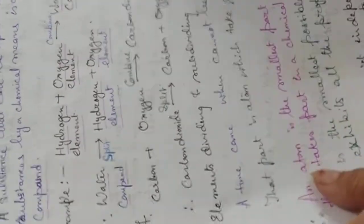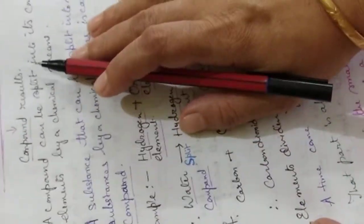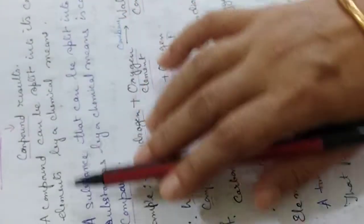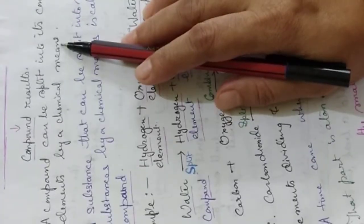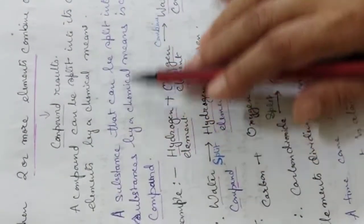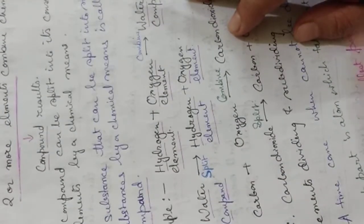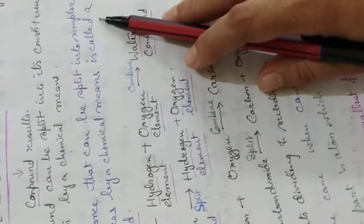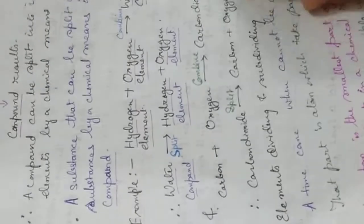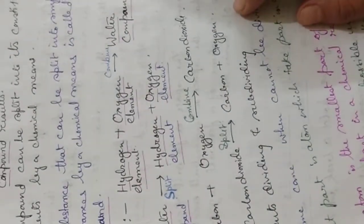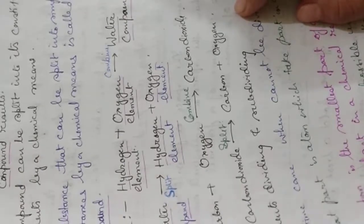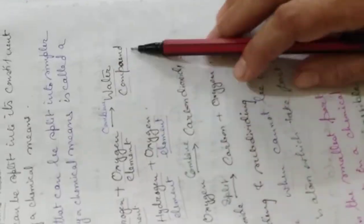When two or more elements combine chemically, they form a compound. A compound can be split into its constituent elements by chemical means. A substance that can be split into simpler substances by a chemical means is called a compound. A compound can be defined in two ways, and both ways are correct.